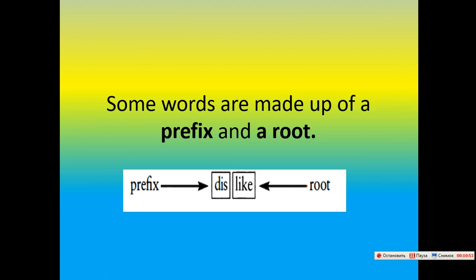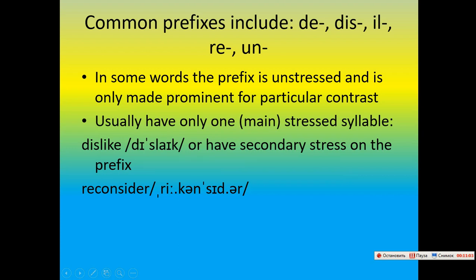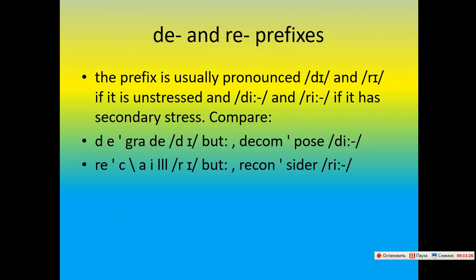Some words are made of a prefix and a root. Common prefixes include de-, dis-, il-, re-, un-. In some words, the prefix is unstressed and is only made prominent for particular contrast. Words usually have only one stressed syllable, like 'dislike', or have secondary stress on the prefix. Consider de- and pre- prefixes: the prefix is usually pronounced 'de' and 'pre' if unstressed, and 'dee' and 'pree' if it has secondary stress.